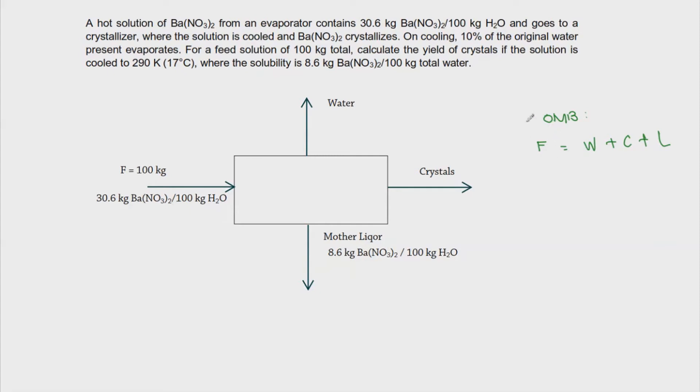And then let us try to provide the necessary information right here. It says also here that water, that 10% of the original water is evaporated. So let's add 10% of original water. So now we can substitute the values for this overall material balance. And then we have 100, that is equal to 10% of the original water.